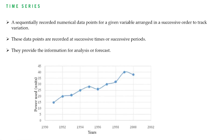First, we will see what is time series. Usually, we are concerned with, say for example, temperature or rainfall, or if you want to go to some other place, we will see the forecast of weather and rainfall. This is done based on the time series data. Time series data is a sequentially recorded numerical data points for a given variable arranged in a successive order. This is done to track variation in the data. If these data points are recorded at successive times or successive periods, then it is called time series data.